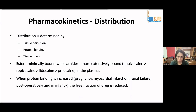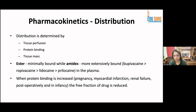Distribution of the drug is determined by tissue perfusion, protein binding, and tissue mass. Esters are minimally protein-bound, while amides are more extensively bound — which is why amides are longer-acting. Bupivacaine has the most protein binding and prilocaine the least. When protein binding is increased due to conditions such as pregnancy, post-myocardial infarction, renal failure, or in children, the free fraction of drug is reduced.